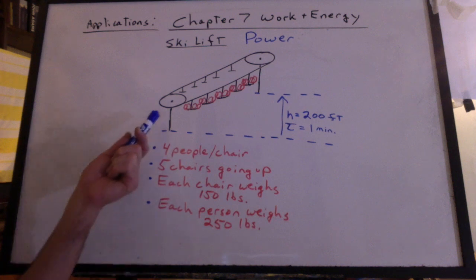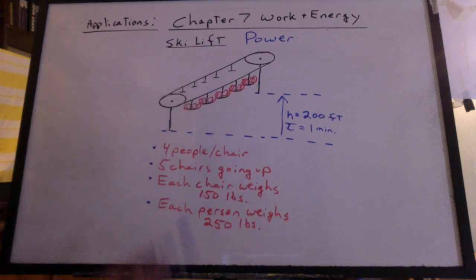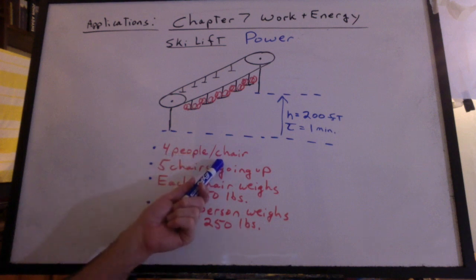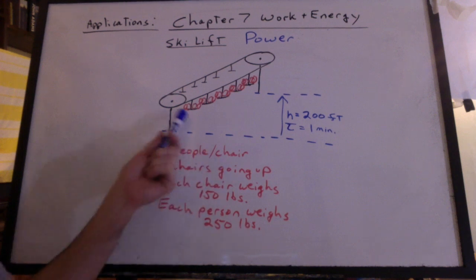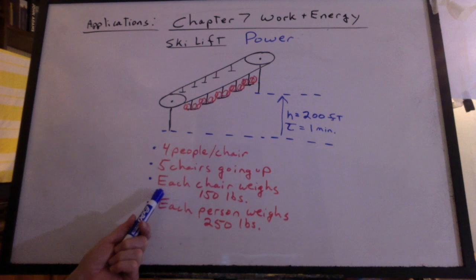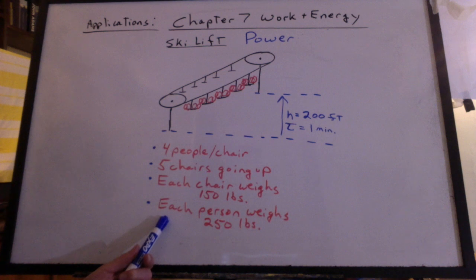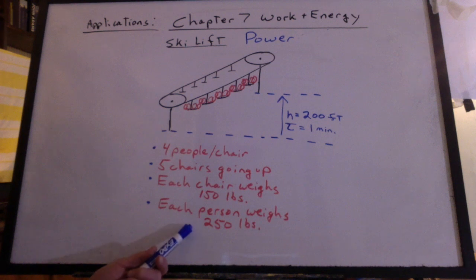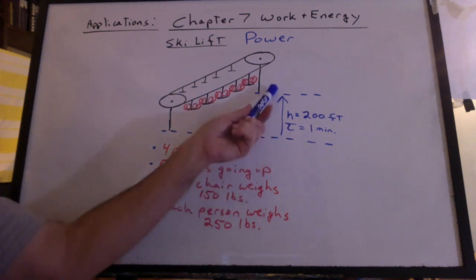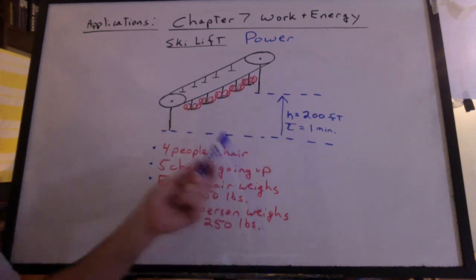How much power does it take to operate a ski lift? We have four people per chair, five chairs going up the hill. Each chair weighs 150 pounds, and we have to allow for the maximum load of 250 pounds for each person. It's not likely you're going to get that many people on here that weigh that much, but engineers have to think about an upper limit.